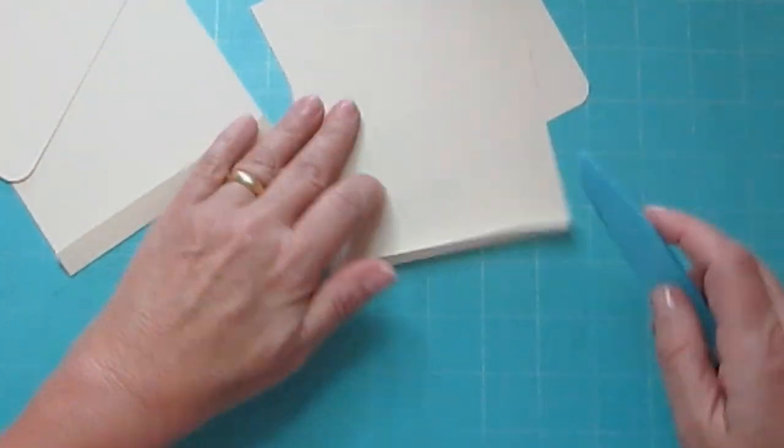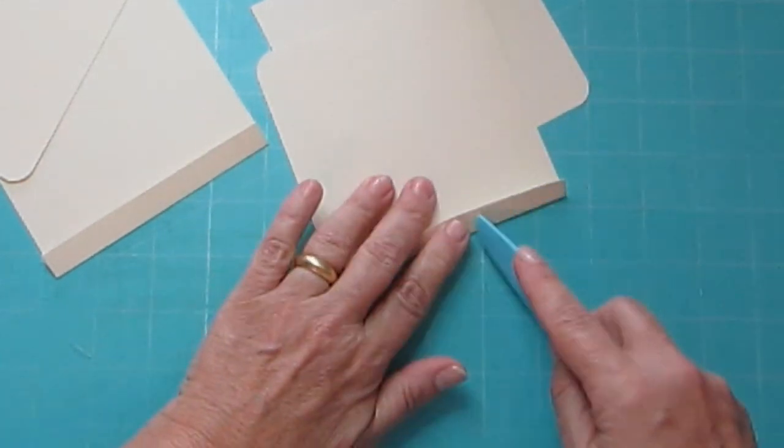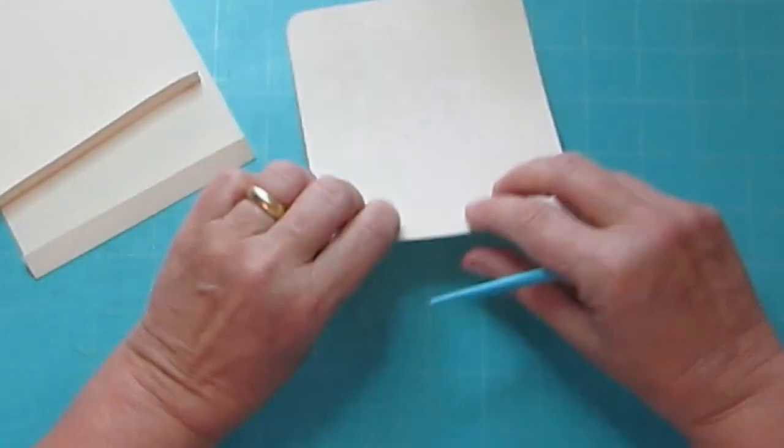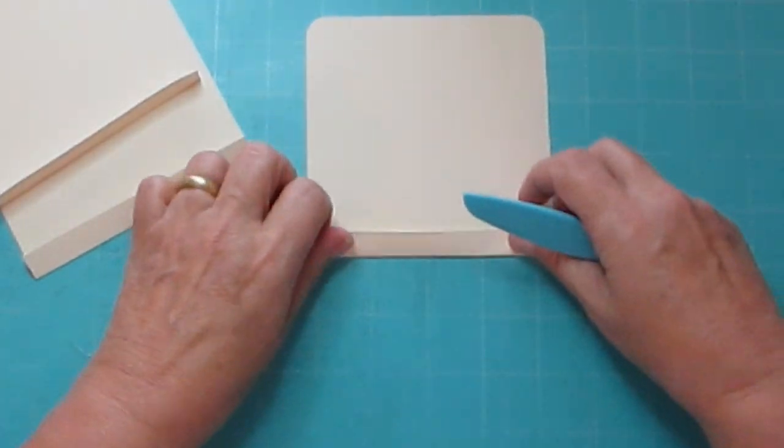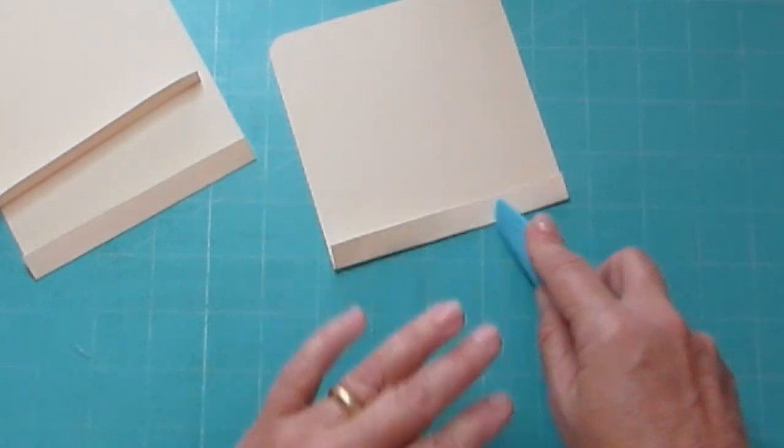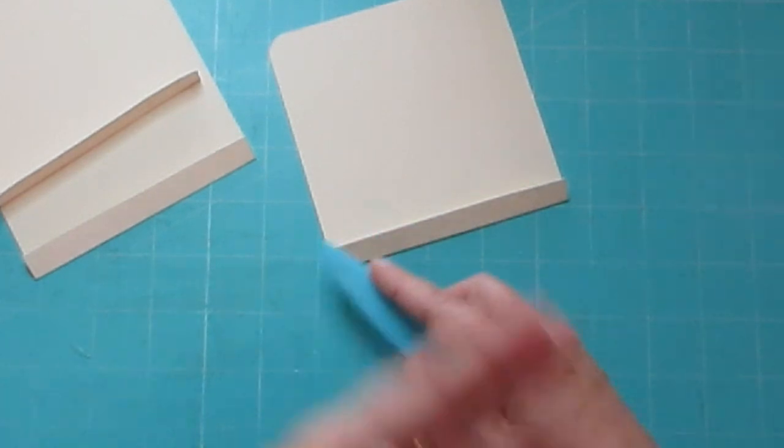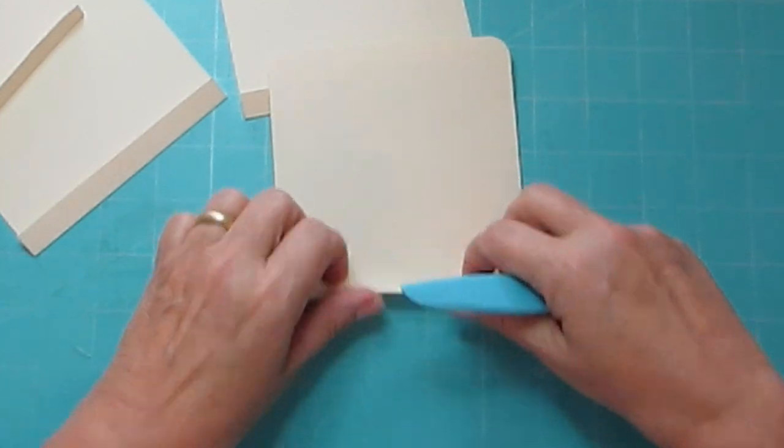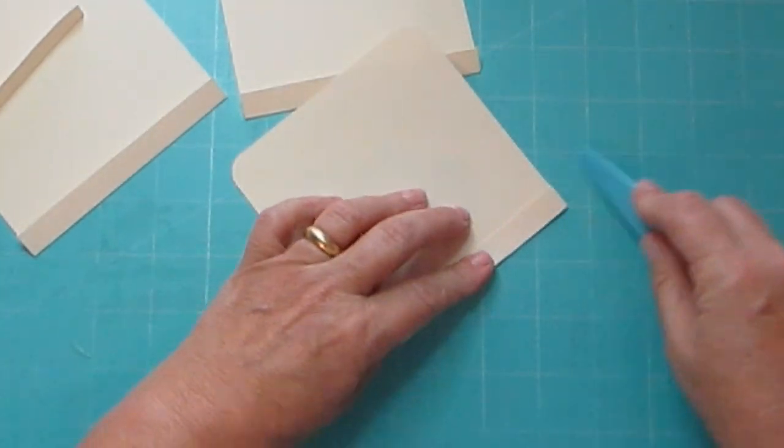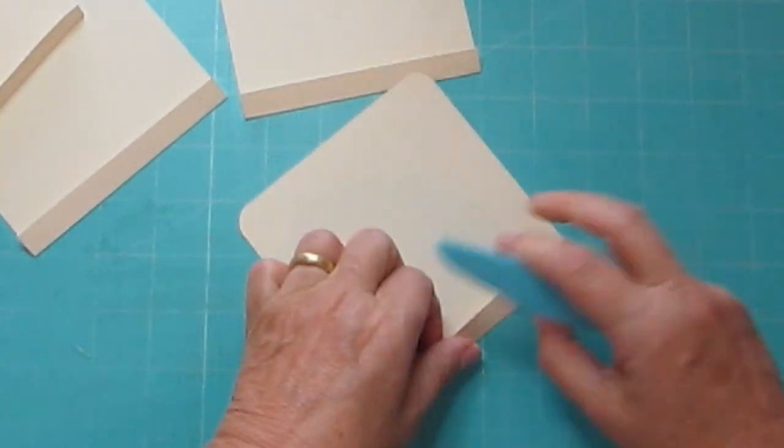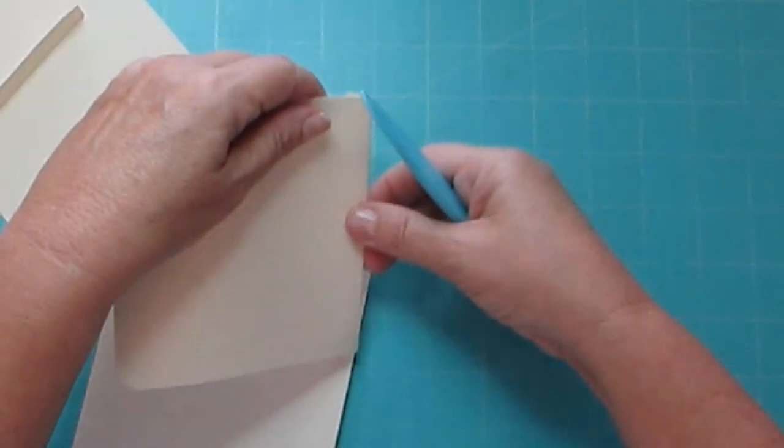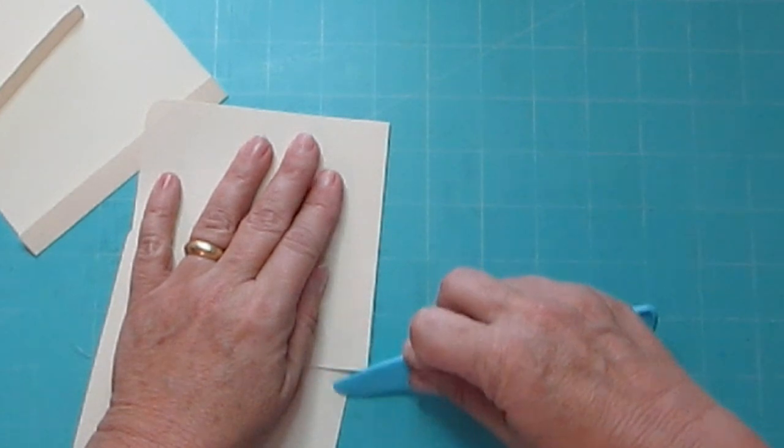You're going to be surprised how easy it is, because even though you score it on a straight line, you don't always fold it straight and that's where the problem can come in.